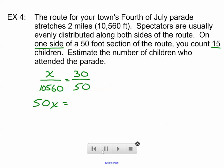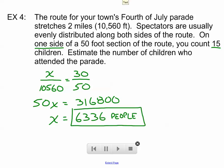I can divide both sides by 50, and I get 6,336 people, and actually we'll call that not people, but children. Children are people, but we're talking specifically about children.